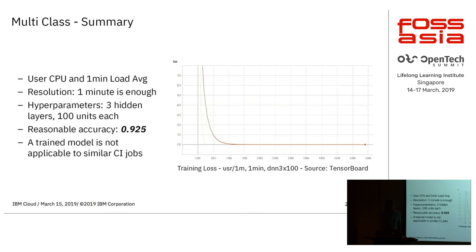To summarize the multi-class results: user CPU and the one-minute load average were again the best feature selection. It's an interesting takeaway that just by looking at CPU and average system load every minute, you can actually identify the underlying cloud provider hosting the VM. This makes us think the approach could be used to create specific benchmarks applied to different cloud providers to recognize different types of issues.